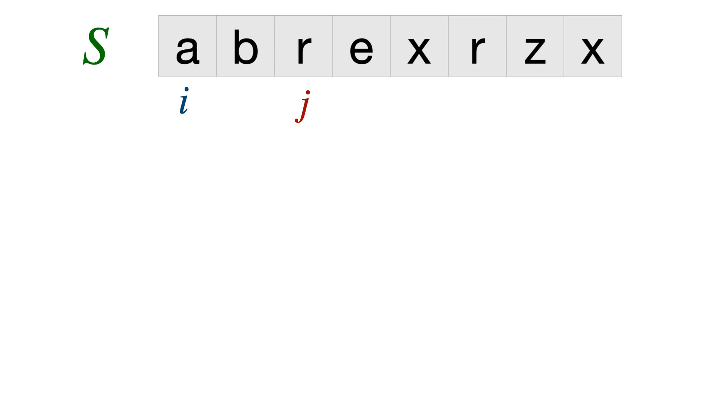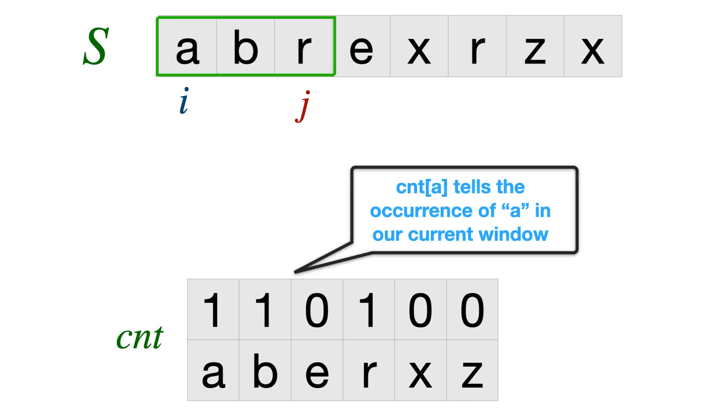We will also maintain a window starting from index i and it ends at index j. And for our current window, we will always maintain a count mapping, which tells us for given character how many times does it occur in the window. So in this case, as you can see, the count values are 1 for only characters A, B and R, which is essentially representing the characters which we have in our window. So how is this useful to us?